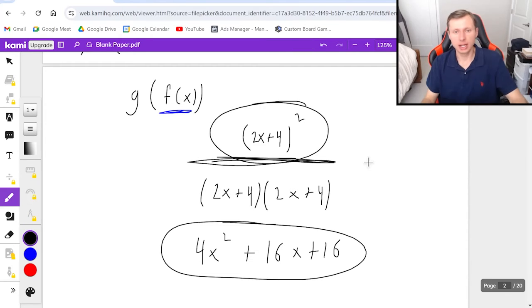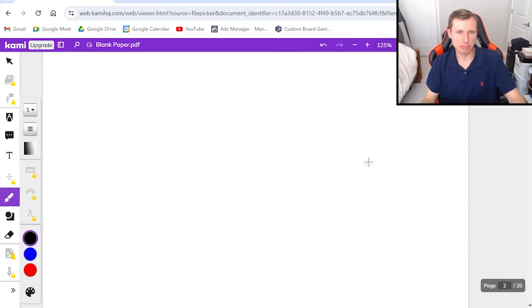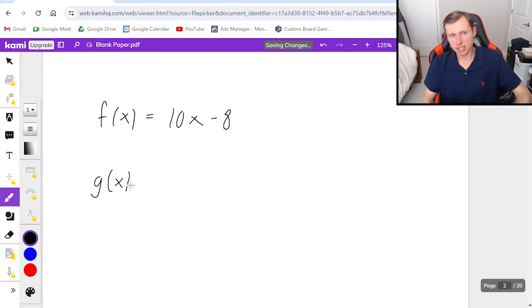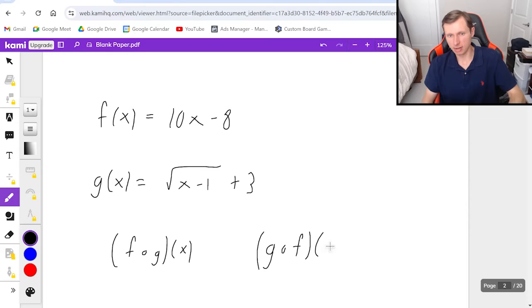Now we're just going to do a couple more examples with this today and then you're free to go do your homework or whatever you want to do. For the first one, I have f(x) = 10x - 8, and g(x) is going to be the square root of x - 1 plus 3 like this. My question for you is I want both f of g of x and I want you to find g of f of x. So go ahead, pause the video, give it a try, and when you're ready to see the solution, unpause the video.